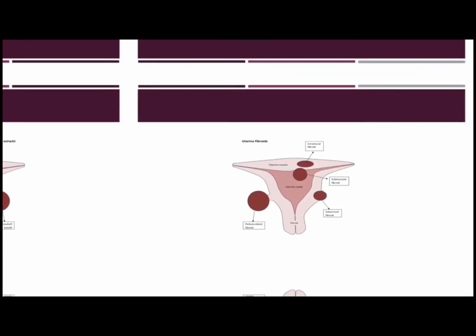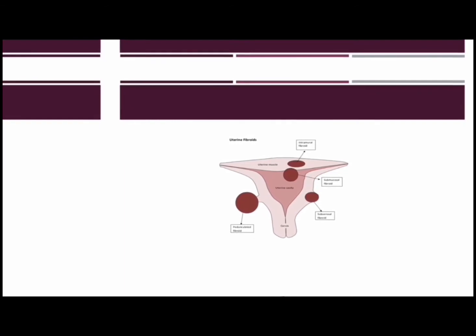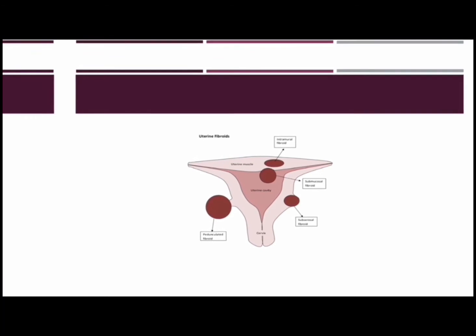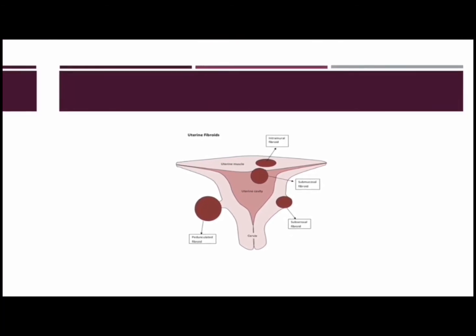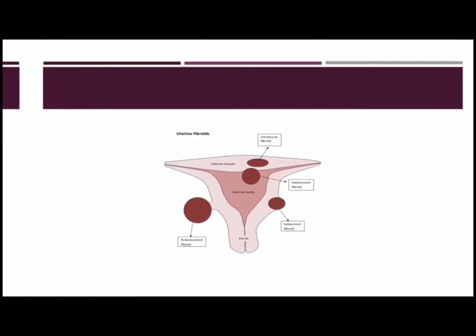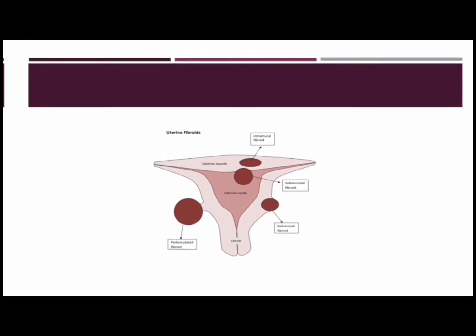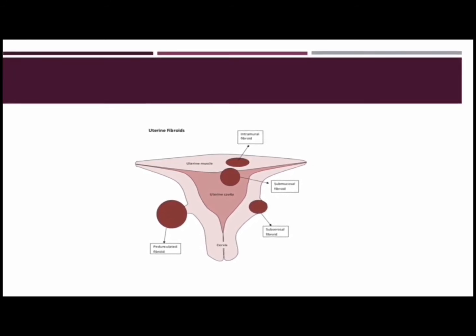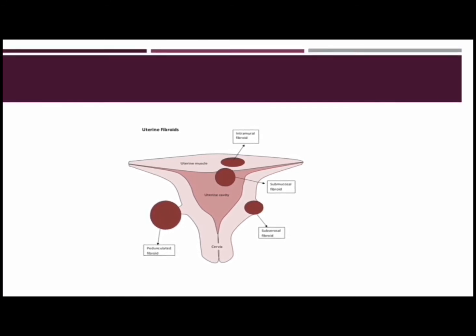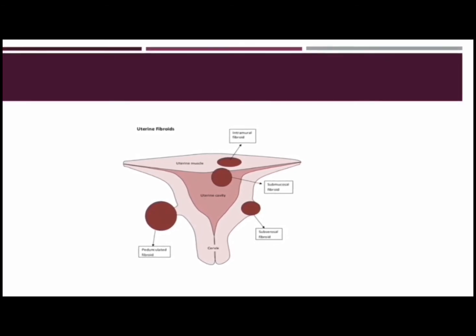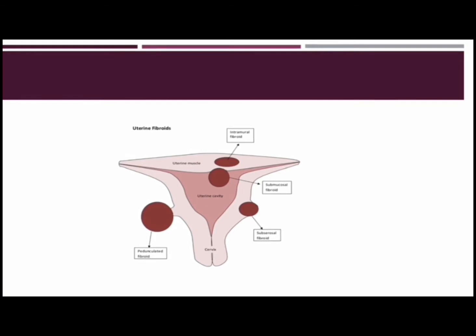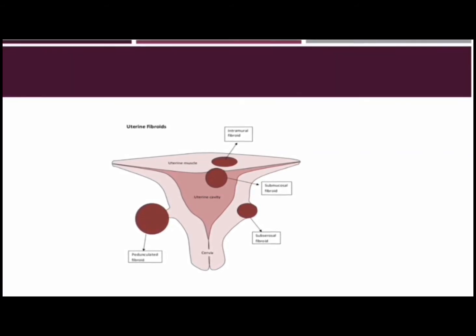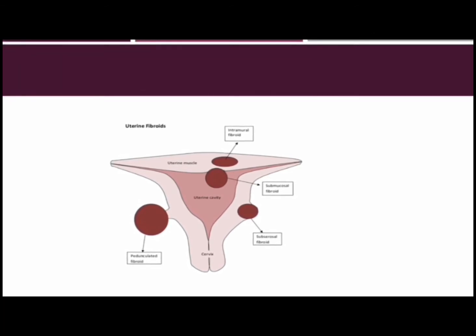There are four specific locations where you can have uterine fibroids. We have the submucosal fibroids, where the fibroids are growing inside the uterine space where a baby grows during pregnancy — think of the growths as extending down into the empty space in the middle of the uterus. We have the intramural fibroids, which are embedded into the wall of the uterus itself. Picture the sides of the uterus like walls of a house — these fibroids are growing inside this muscular wall.